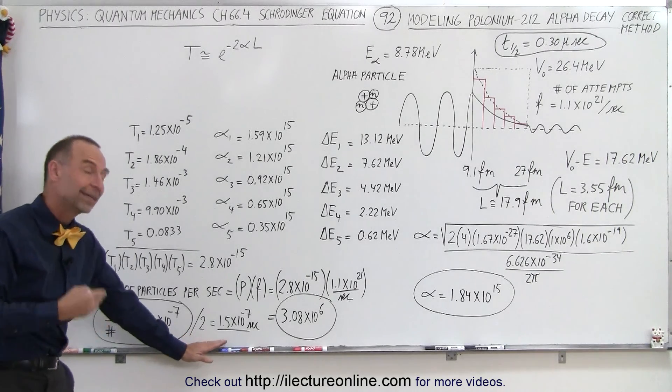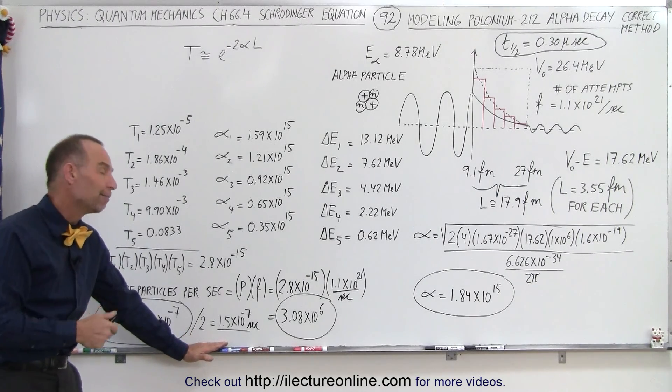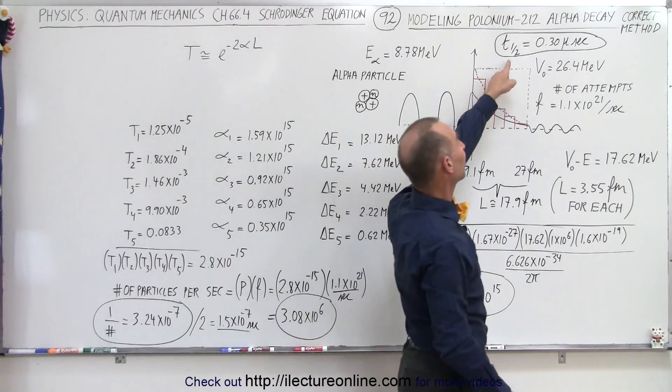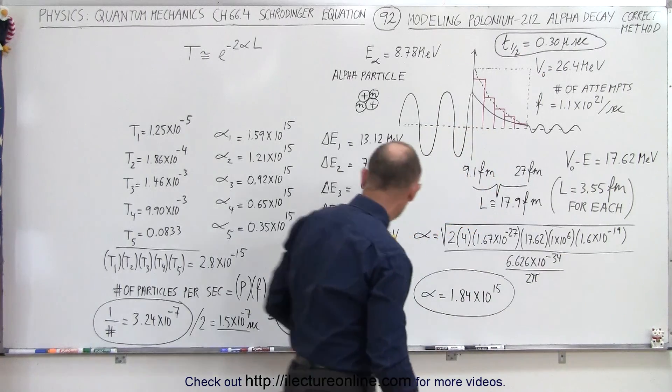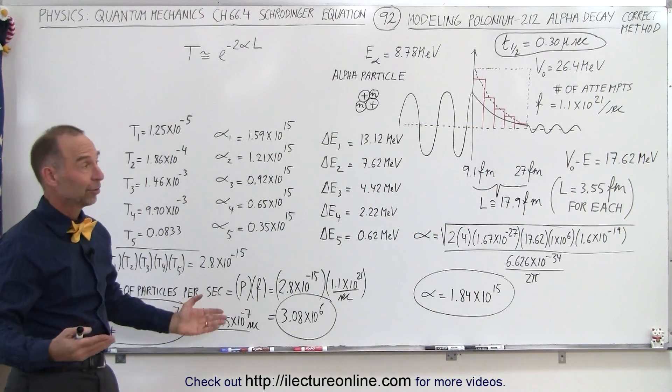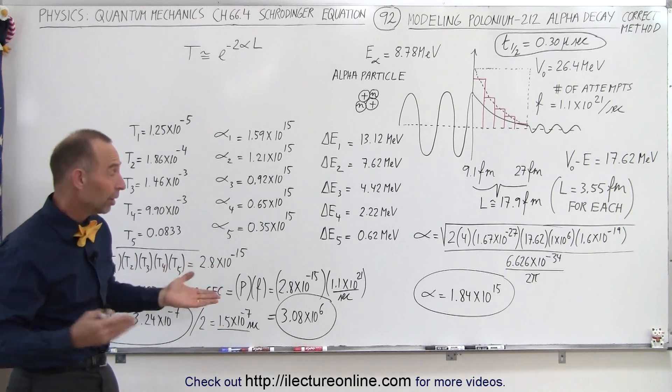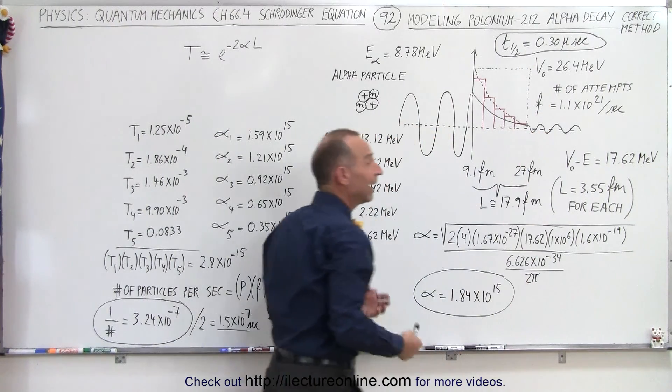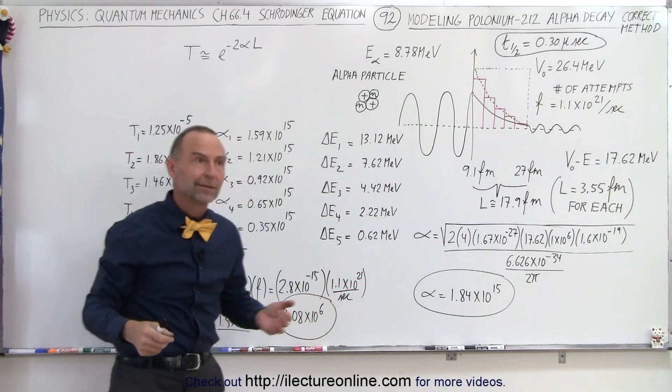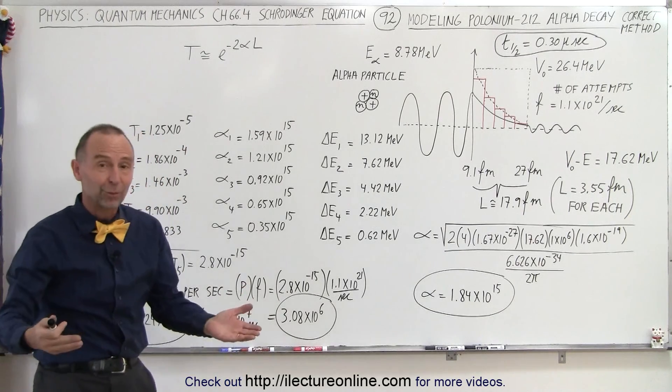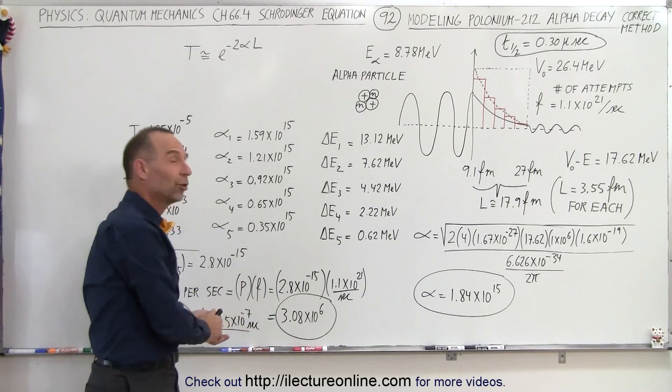Now how does that compare to the actual observed half-life? The observed half-life is 0.3 microseconds and our calculated value is around 1.5 microseconds, a 2 to 1 ratio. Well that's a whole lot better than the previous video where we assumed that the barrier was rectangular and then we're off by 10 to the 12th. So being off by one half versus 10 to the 12th, this is much much closer to the true value.